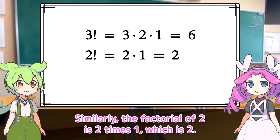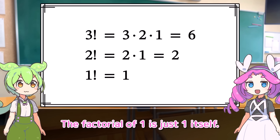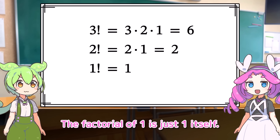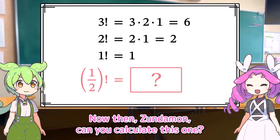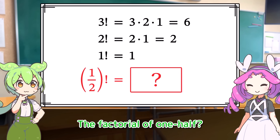Similarly, the factorial of 2 is 2 times 1, which is 2. The factorial of 1 is just 1 itself. Now then, Sundeman, can you calculate this one? The factorial of 1 half?